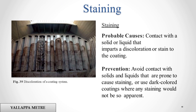Staining. Probable causes: contact with a solid or liquid that imparts a discoloration or stain to the coating. Prevention: avoid contact with solids and liquids that are prone to cause staining, or use dark colored coatings where any staining would not be so apparent.